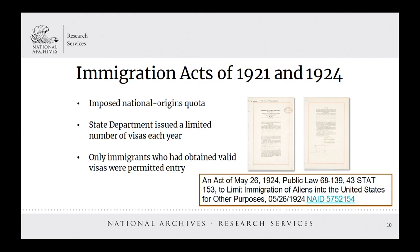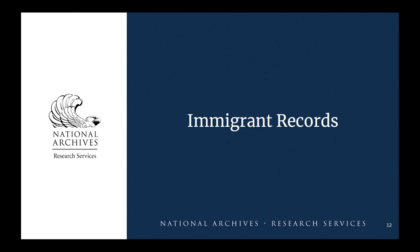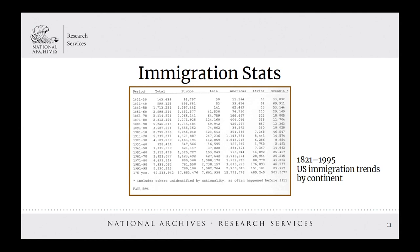The Immigration Acts of 1921 and 1924 added another layer of documentation for individuals entering the U.S., as they imposed a national origins quota which limited the number of visas issued to individuals from different countries by the State Department each year. Only immigrants with valid visas were permitted entry. This graphic shows immigration trends to the U.S. from 1821 to 1995. You can see how the Immigration Acts from the 1920s dramatically shaped the quantity and geographic origin of immigrants to the U.S. throughout the mid-1900s.